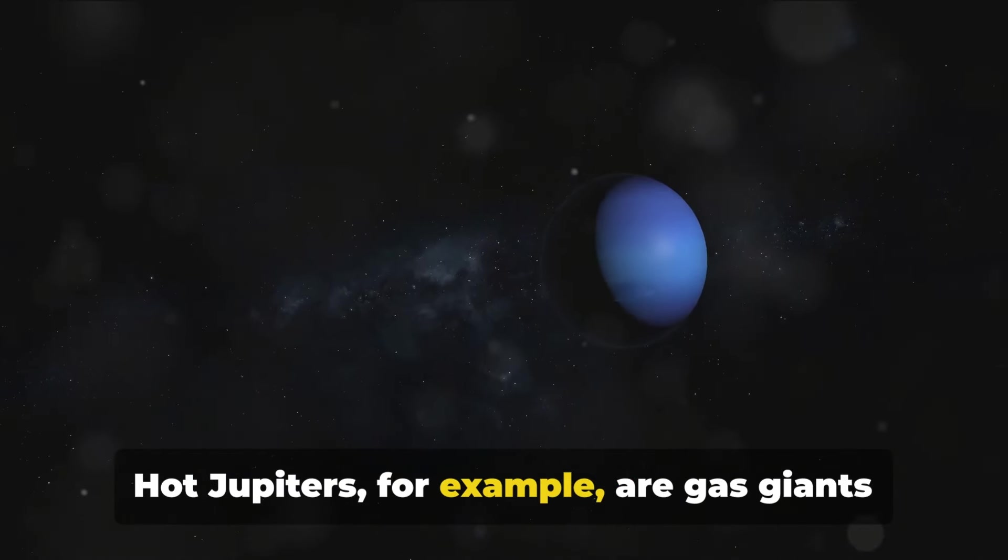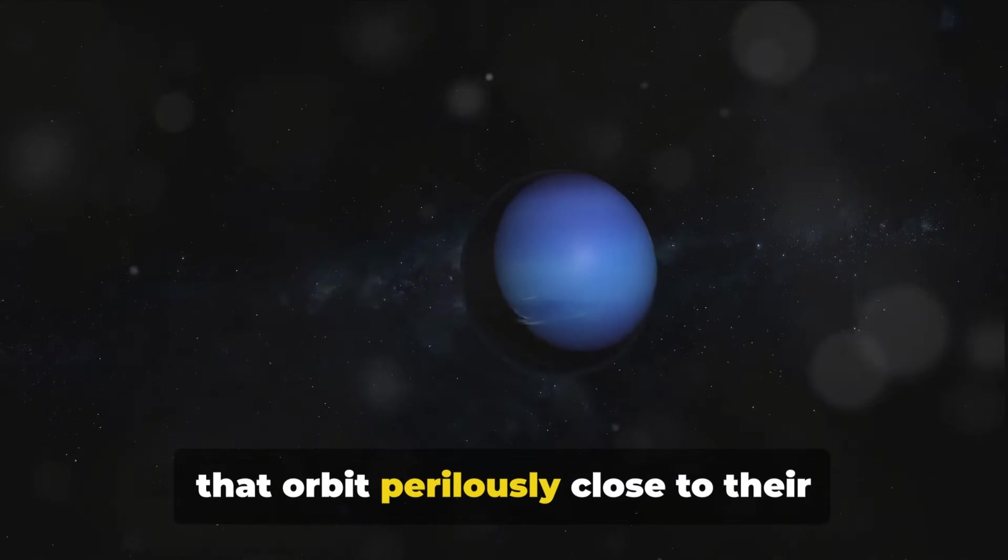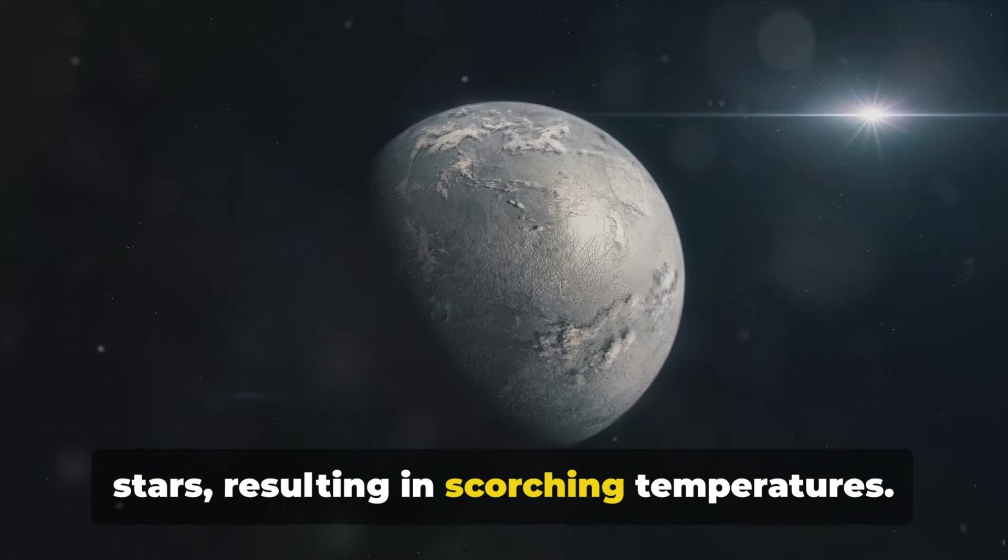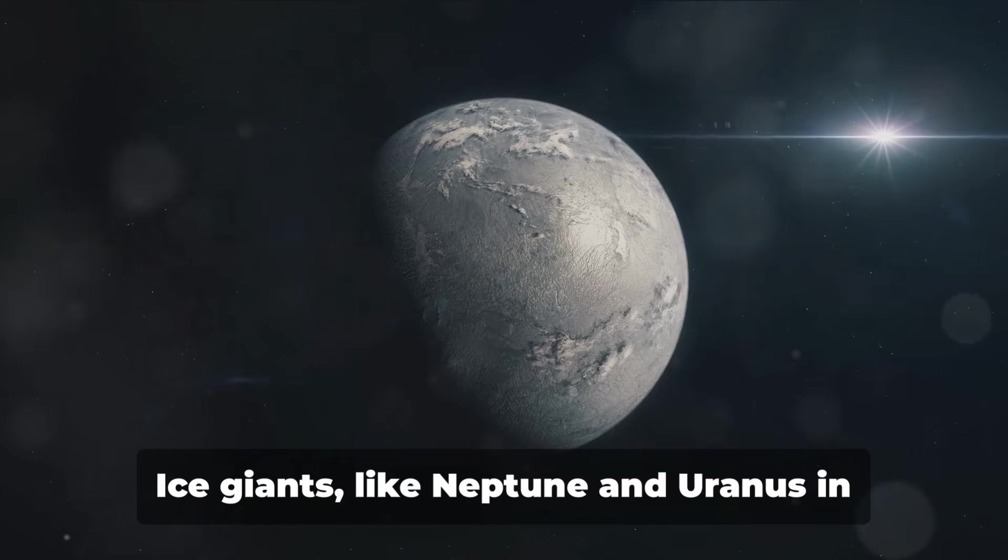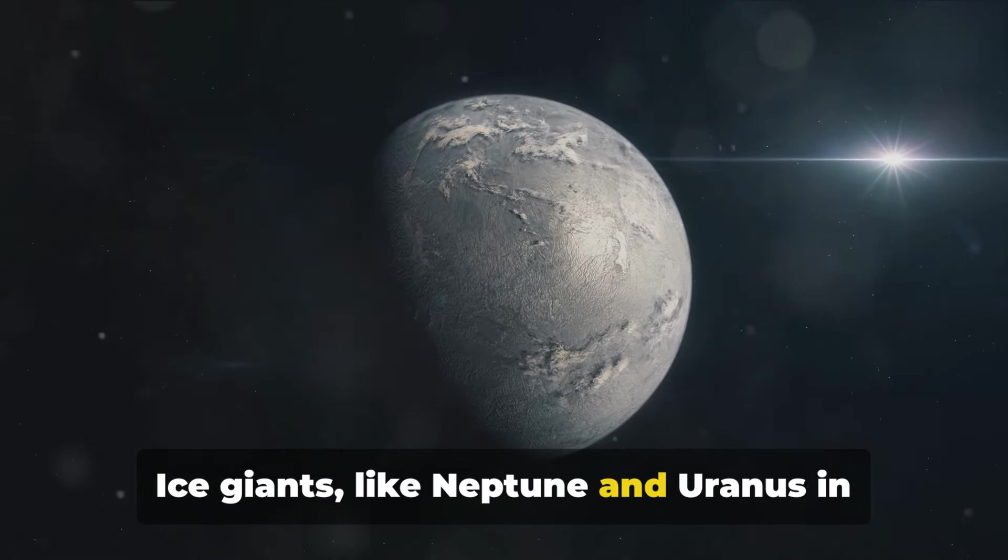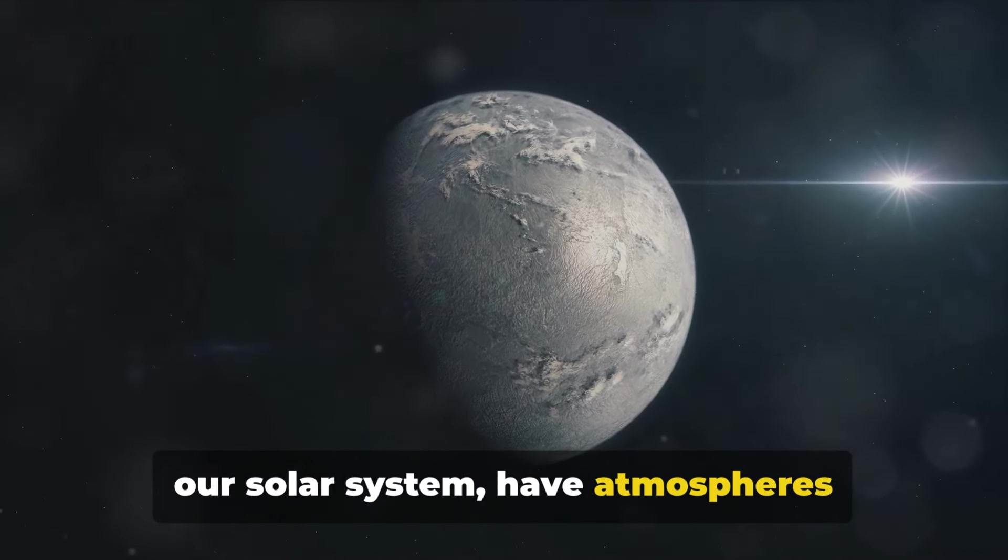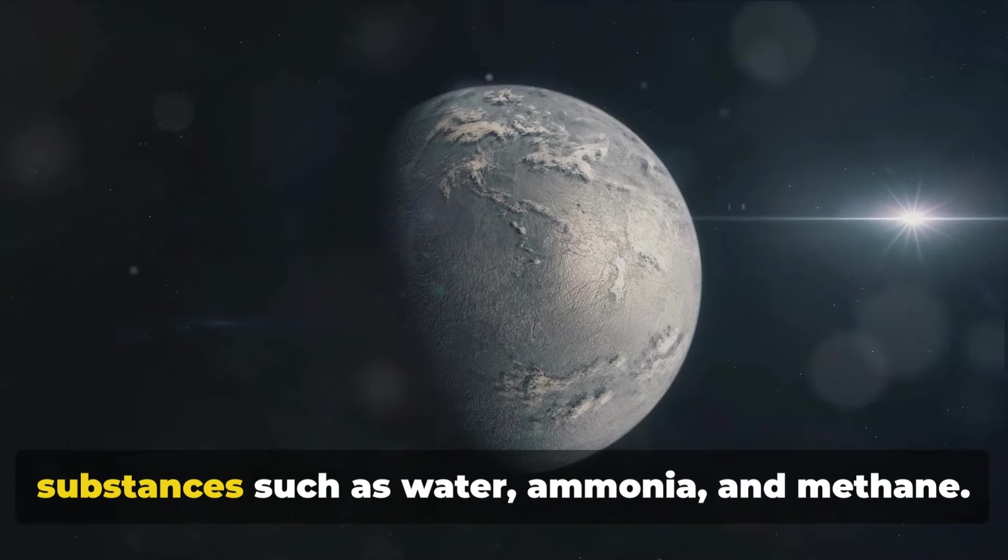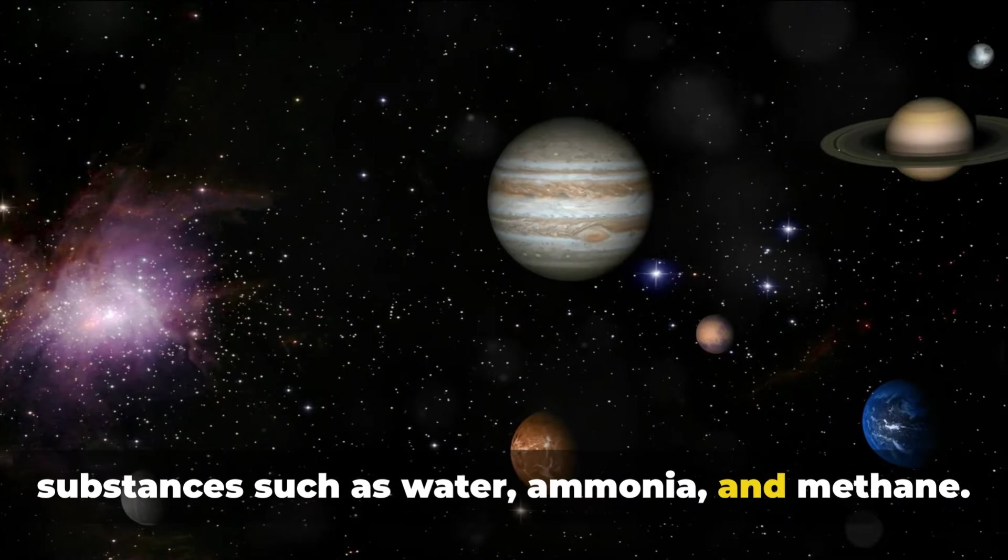Hot Jupiters, for example, are gas giants that orbit perilously close to their stars, resulting in scorching temperatures. Ice giants like Neptune and Uranus in our solar system have atmospheres composed largely of heavier volatile substances such as water, ammonia, and methane.